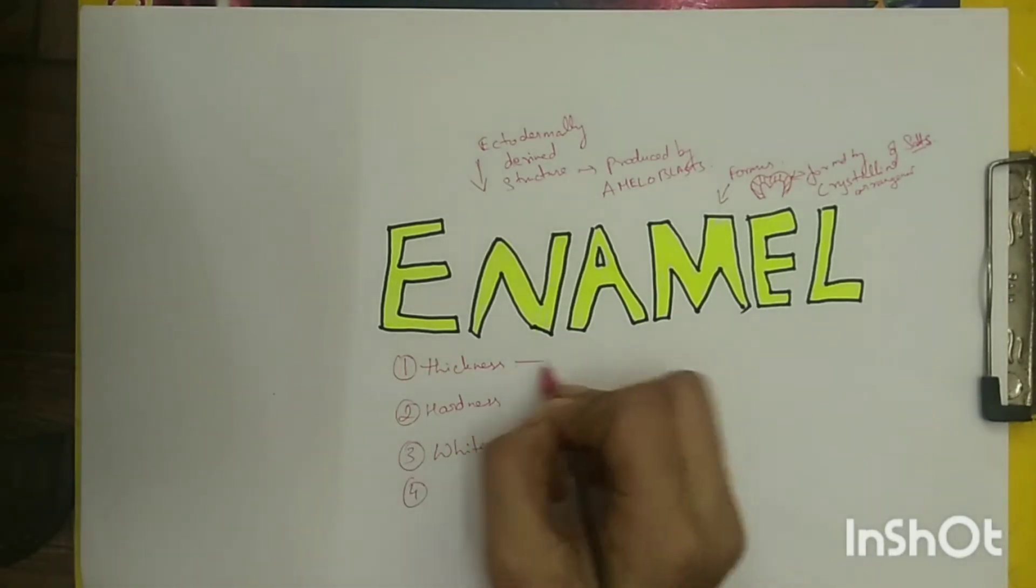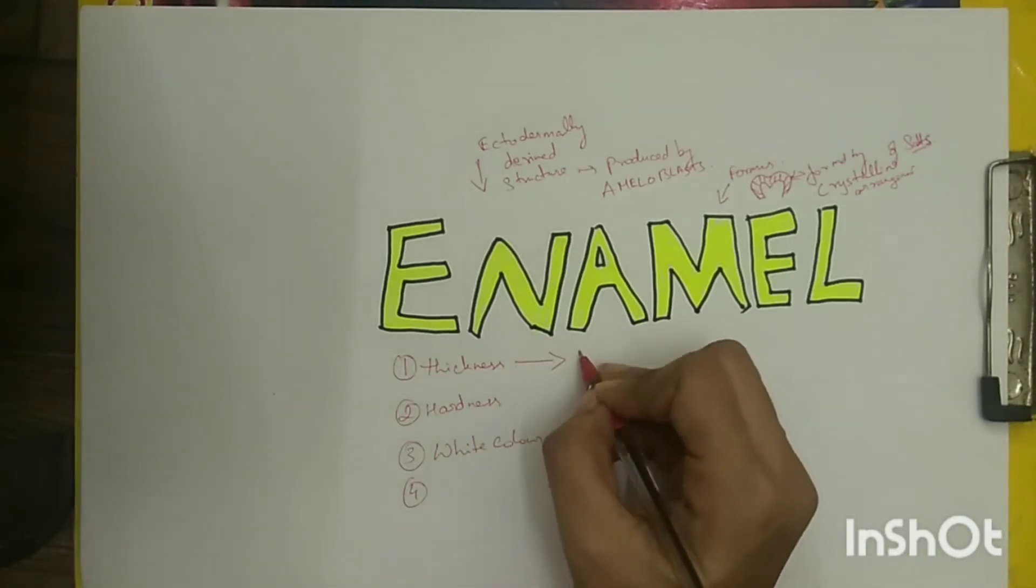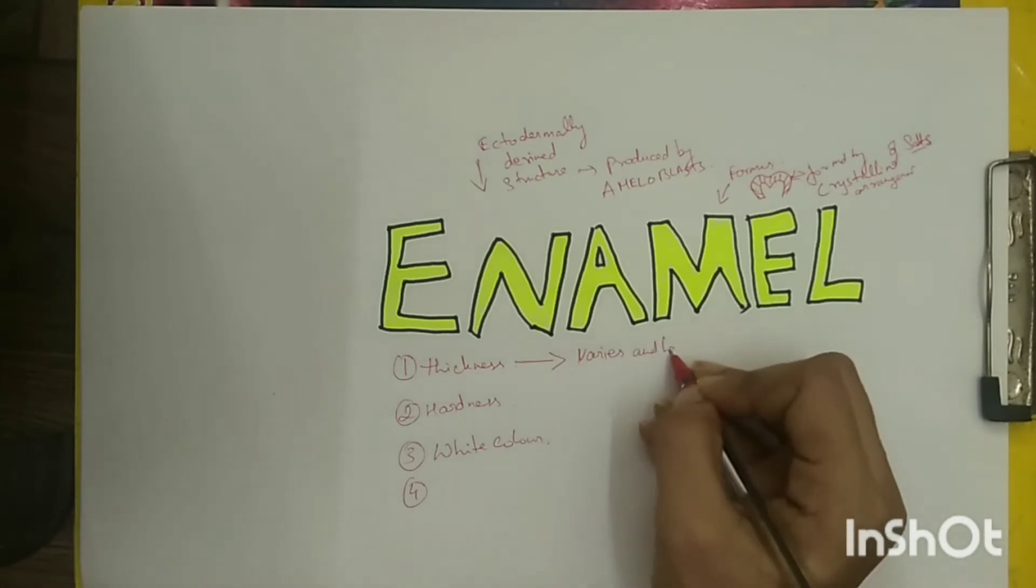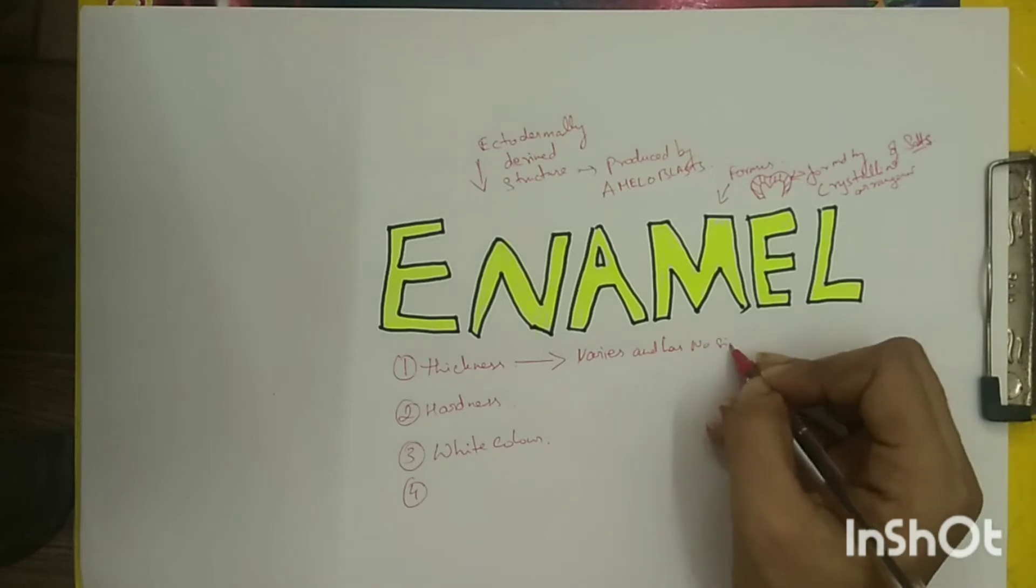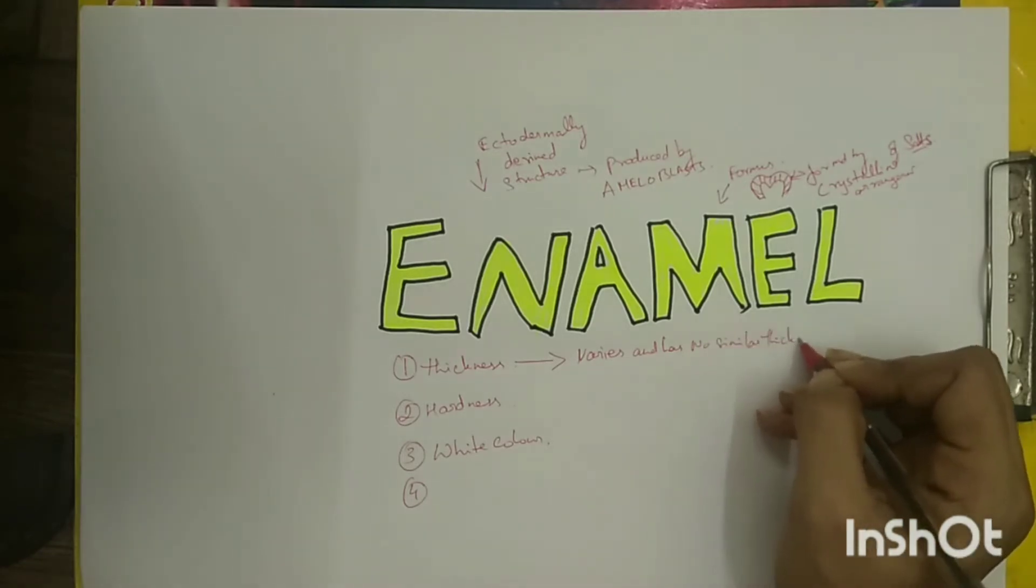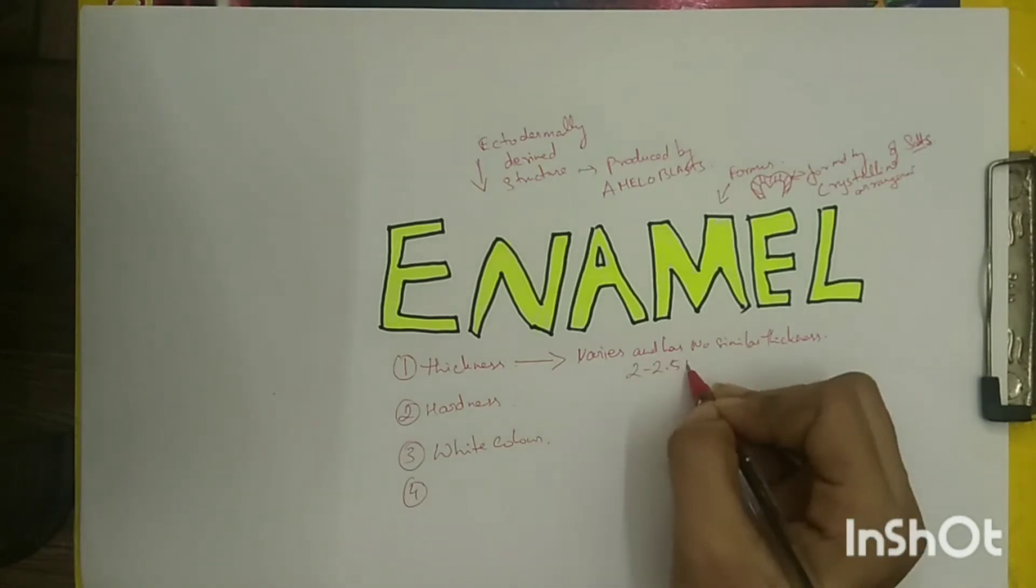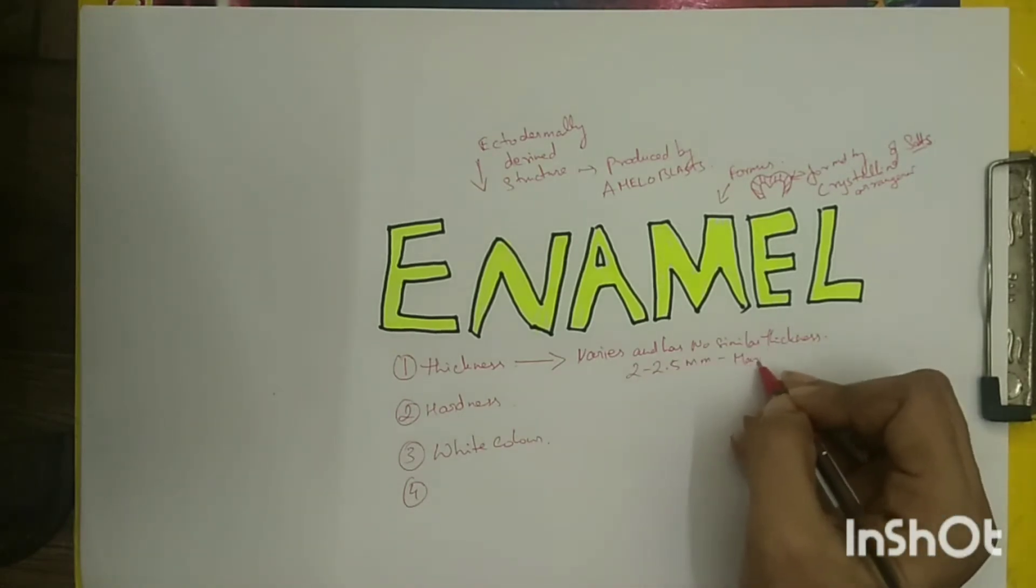Thickness: the enamel thickness is not even throughout the crown. It is thicker in the cusp of molars and premolars, reaching a maximum of 2 to 2.5 mm, and in the cervical region it is almost thin down to a knife edge.